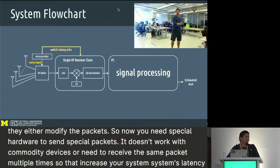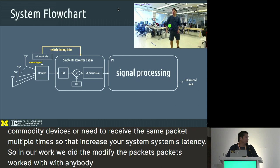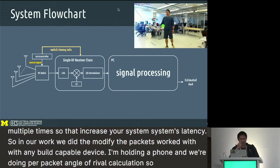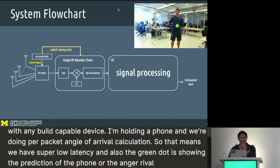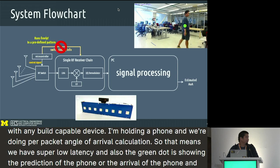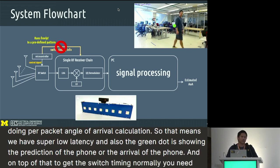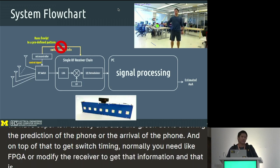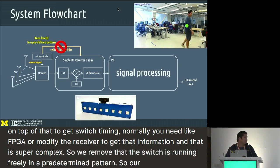In our work, we did not modify packets. It works with any BLE-capable device — I'm holding a phone here — and we do per-packet angle of arrival calculation, so we have super low latency. The green dot shows the predicted angle of arrival of the phone. Also, to get the switch timing, normally you need an FPGA or you need to modify the receiver, which is super complex. So we removed that — the switch runs freely in a predetermined pattern.